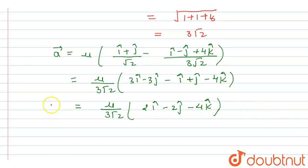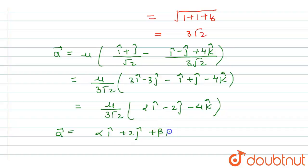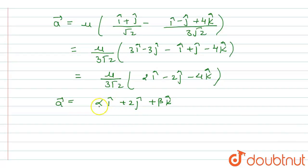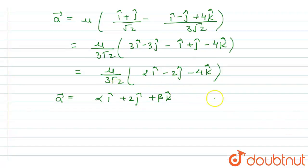This is the value of vector a. The given form of vector a is αî + 2ĵ + βk̂. Comparing coefficients: the coefficient of î is α = 2μ/(3√2), and the coefficient of ĵ is 2 = −2μ/(3√2). We will find the value of μ by comparing the ĵ coefficient.